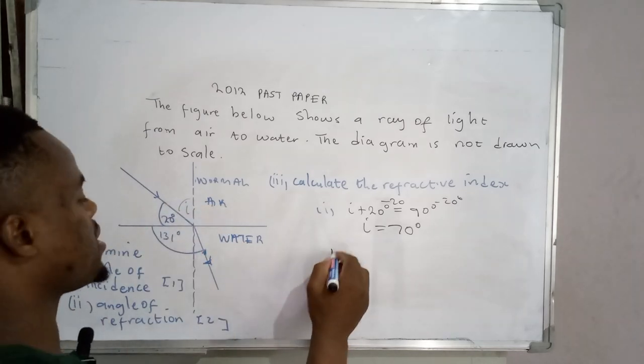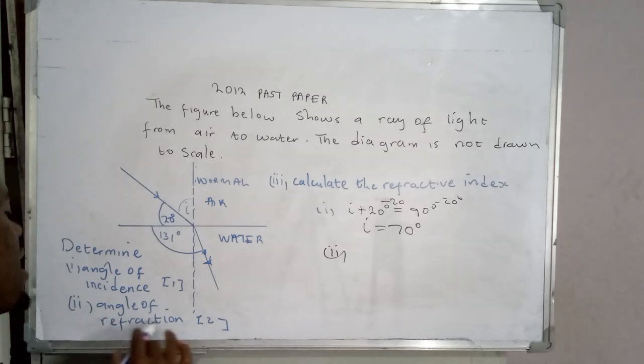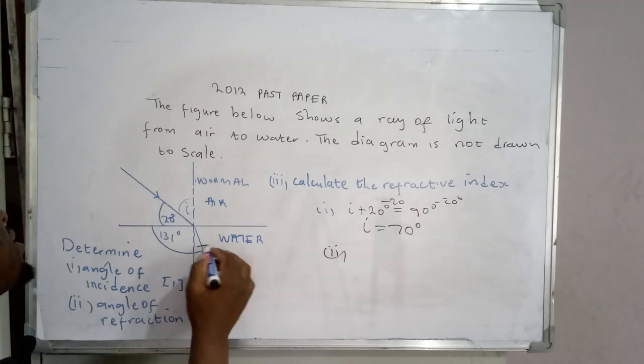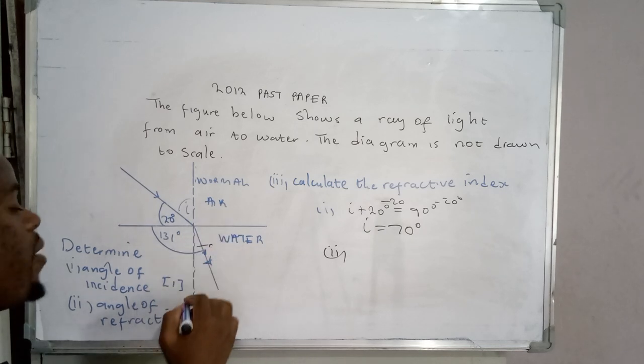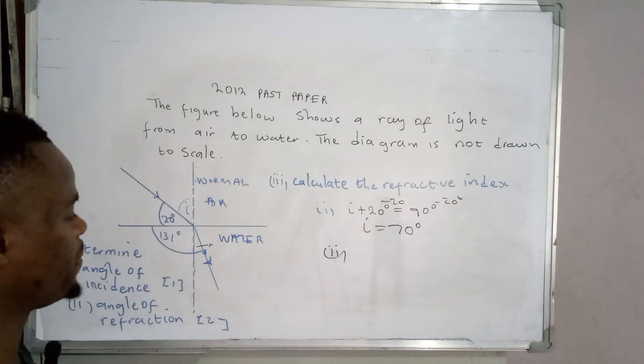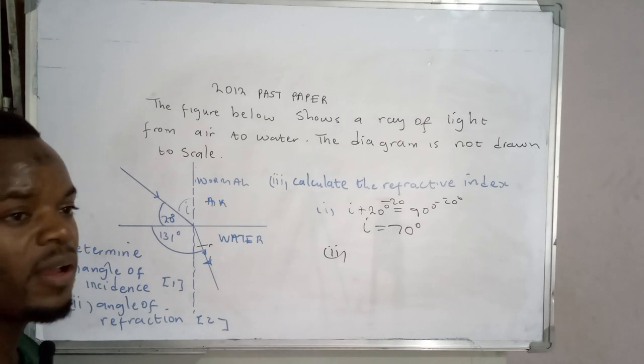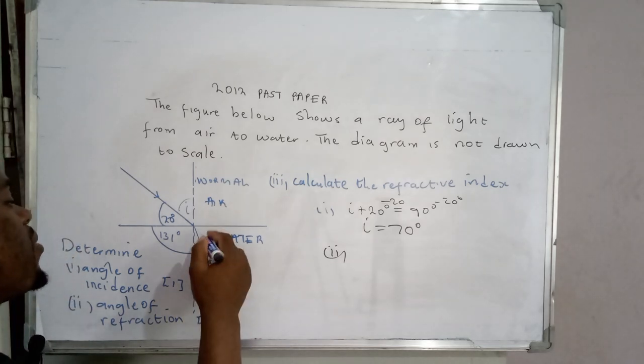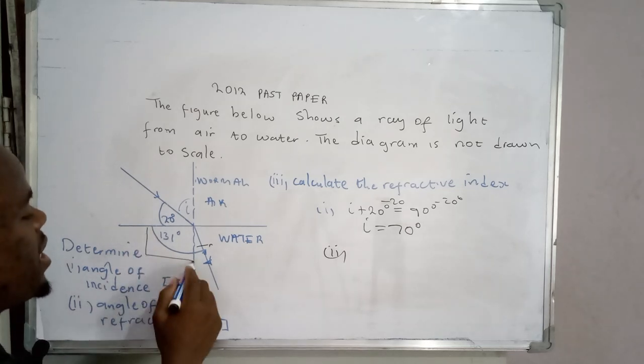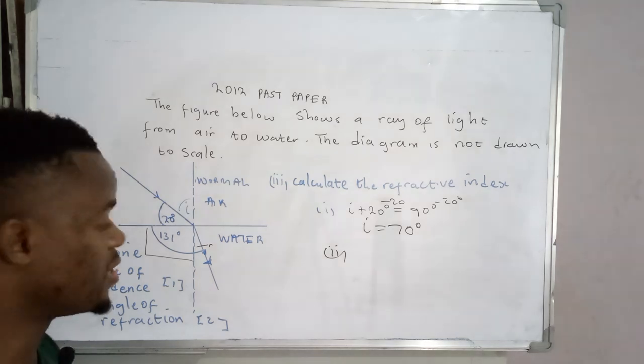Let's move on to the second problem: determine the angle of refraction. So the angle of refraction is this angle here, which is in between the normal and the refracted ray. However, we haven't been given this angle directly, but we've been given this angle. But you need to know that this angle here is actually 90 degrees.